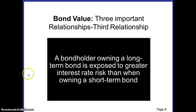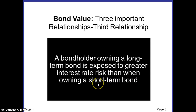An important point is that a bondholder who owns a long-term bond is exposed to greater interest rate risk than when owning a short-term bond. For example, if you own a bond with a maturity period of 15 years — that's a long-term bond — and another bond with a maturity period of only 5 years — that's a short-term bond — you have already learned that whenever there is a change in market interest rates, the prices of the bond must change.